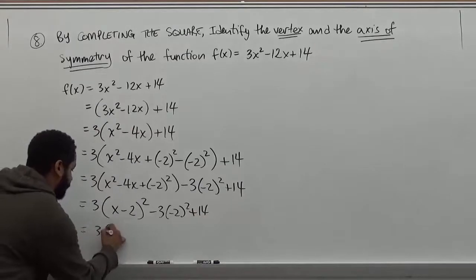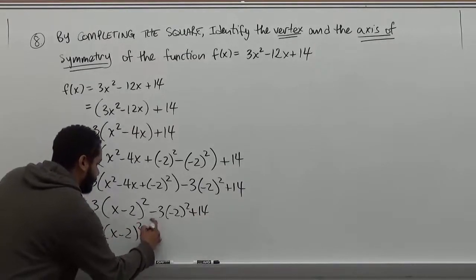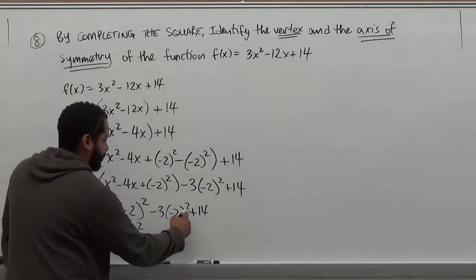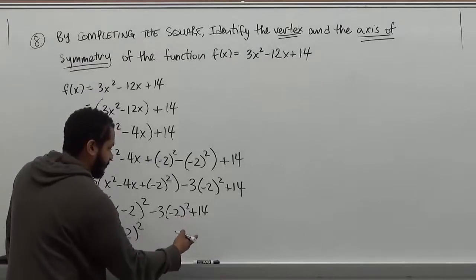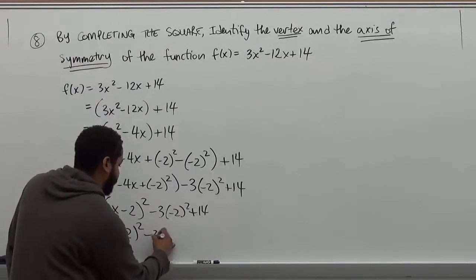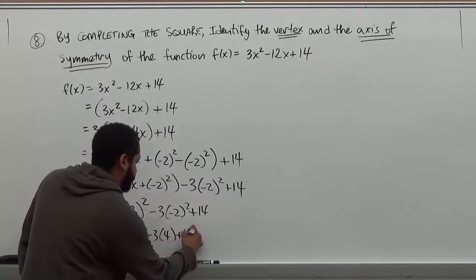So here we have 3(x - 2)². -3 times -2². We're going to follow the rule of operations. -2² is actually 4. So we have -3 × 4 + 14.